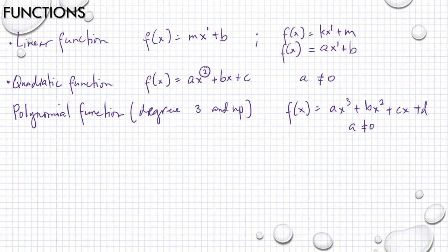Why? Because if a is 0, then we go back to the quadratic function. In quadratic function, if a is 0, then we are back to linear function. So if we have degree 3, then we need to have a at least 1, not 0.